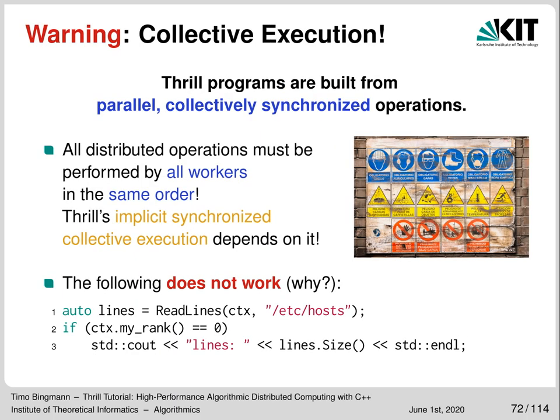One last word of warning — maybe the most important one. In Thrill programs, all workers must perform all distributed operations in the same order. This is because distributed operations implicitly synchronize their collective execution, allowing implementations to assume the states the others are in without communicating — saving communication and latency. So something like the following piece of code does not work: calling the .size method only by the worker with rank zero just does not work, because all workers must run all distributed operations. This is a common pitfall because Thrill's syntax is so convenient.